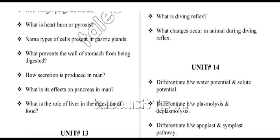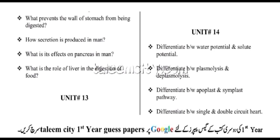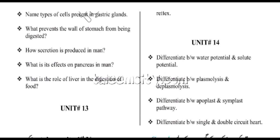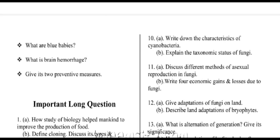From unit number fourteen, we have: differentiate between water potential and solute potential; differentiate between plasmolysis and deplasmolysis; differentiate between apoplast and symplast pathway; differentiate between single and double-circuit heart; what are blue babies; what is brain hemorrhage — write its two preventive measures.